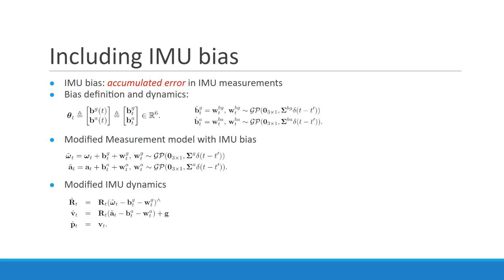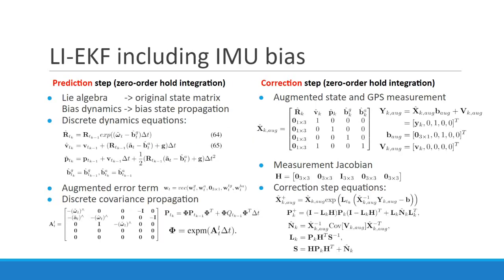We then modify our LIEKF algorithm to include IMU bias. To accurately estimate this accumulated error, we incorporate the biases into the IMU dynamics as additional states. For prediction, we propagate state and bias separately because it is hard to combine them into a desired Lie group, then combine them in the log-linear dynamics using an augmented matrix AT. Since the bias is not related to the GPS measurement, the correction step is the same as before with all matrices augmented accordingly.